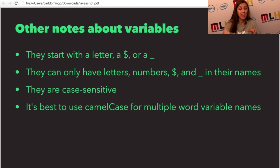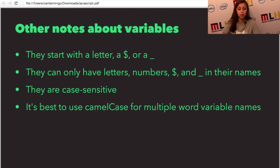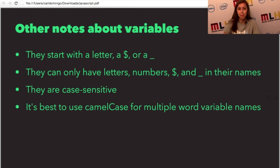Variable names can have numbers in the name — so something like num1 is fine — but you can't start with a number because that'll confuse JavaScript. Variable names can consist of letters, numbers, dollar signs, and underscores. They are case sensitive, so pay attention to lowercase and capital letters. It's also best practice to use camel case for multiple-word variable names — like thisIsNotDefinedYet — where the beginning of each new word is capitalized with no spaces or underscores. That's the standard for JavaScript.